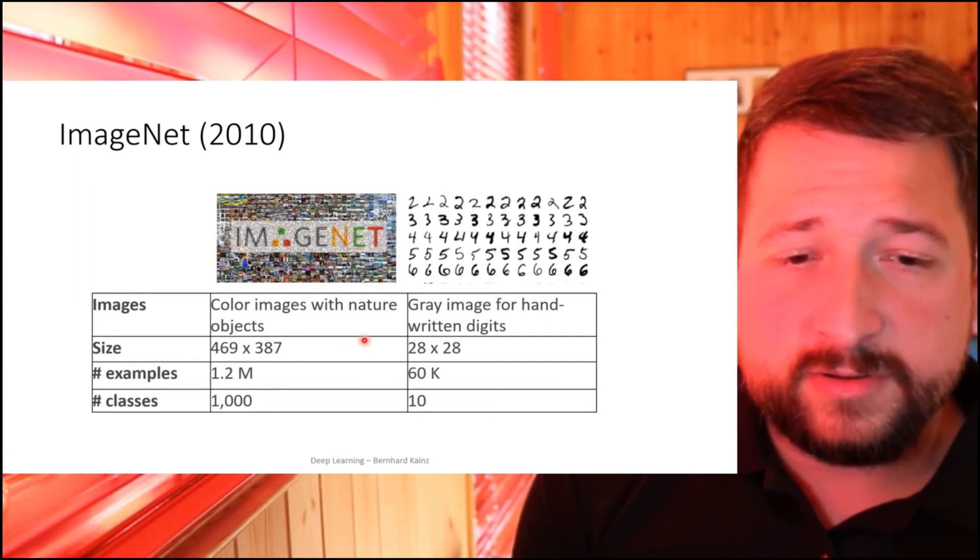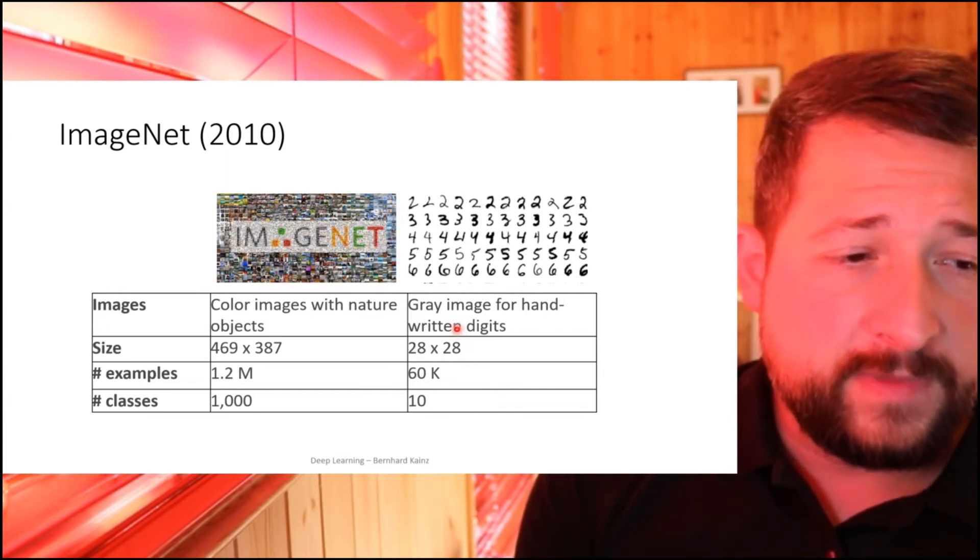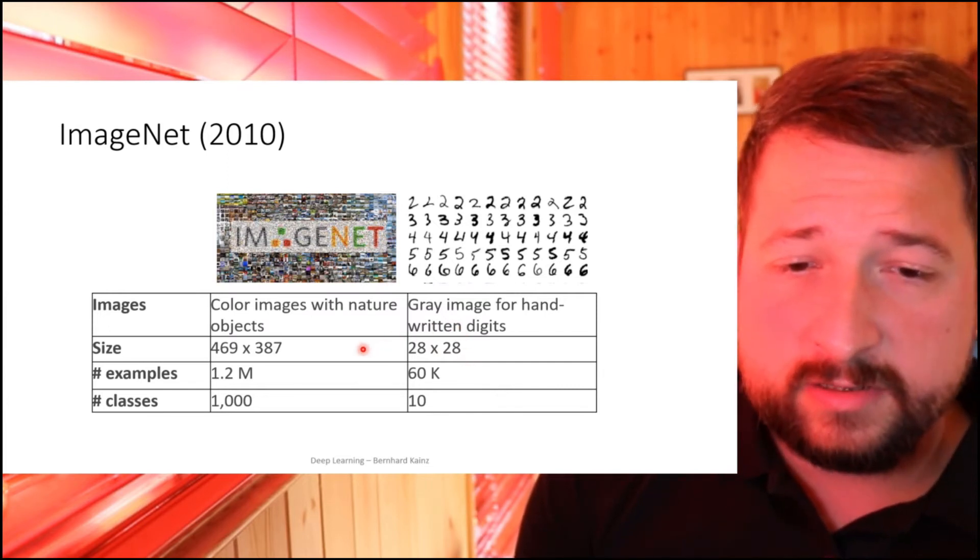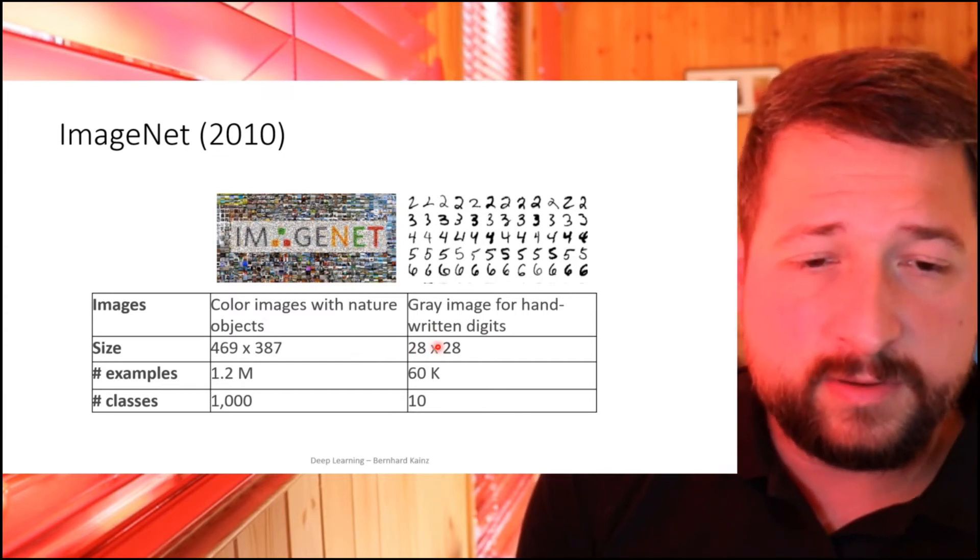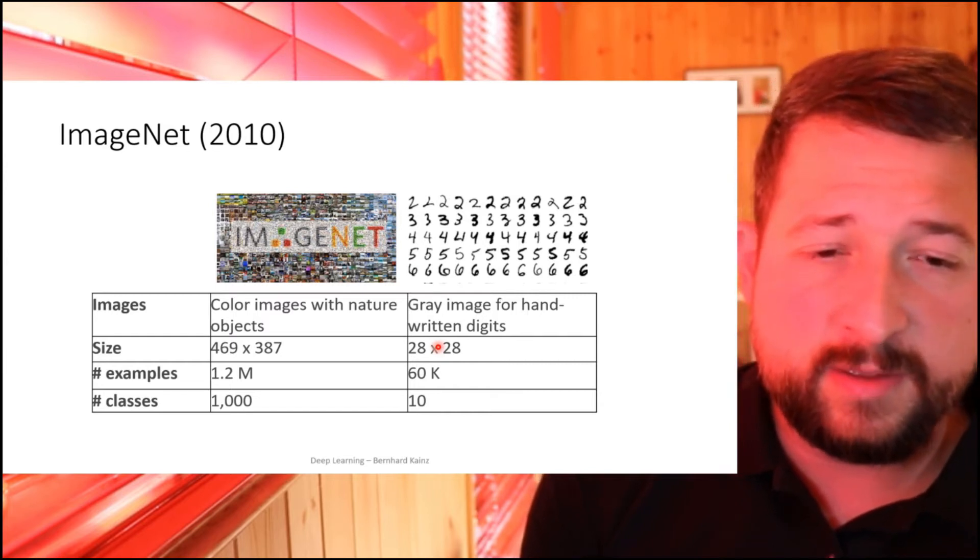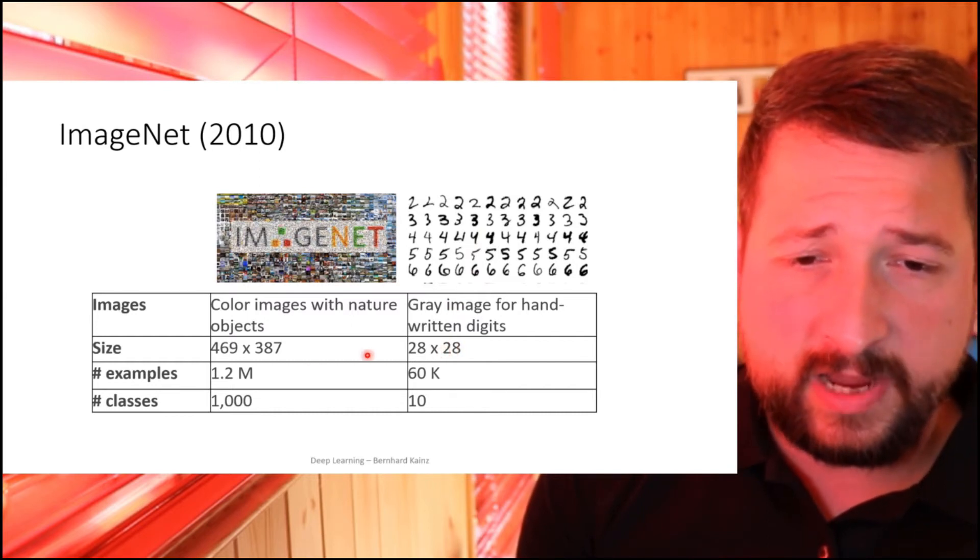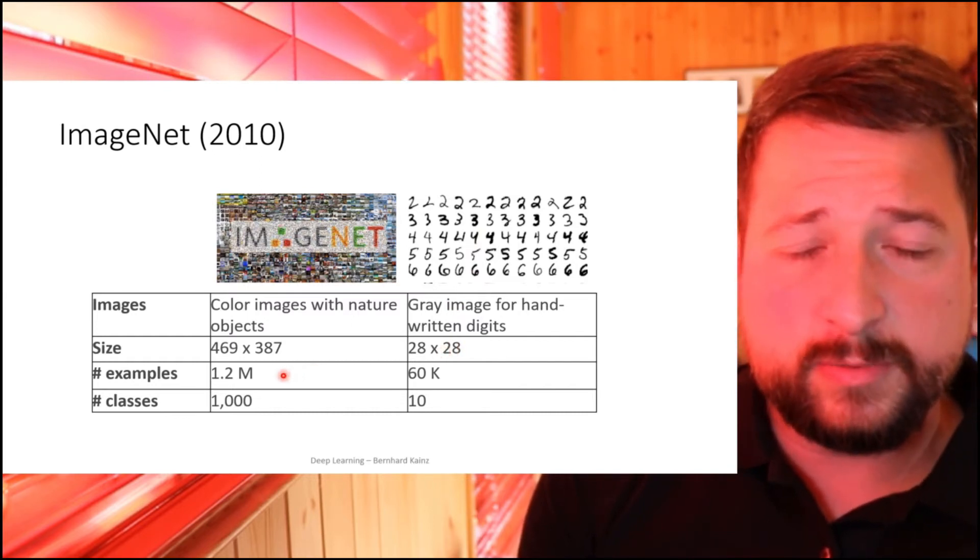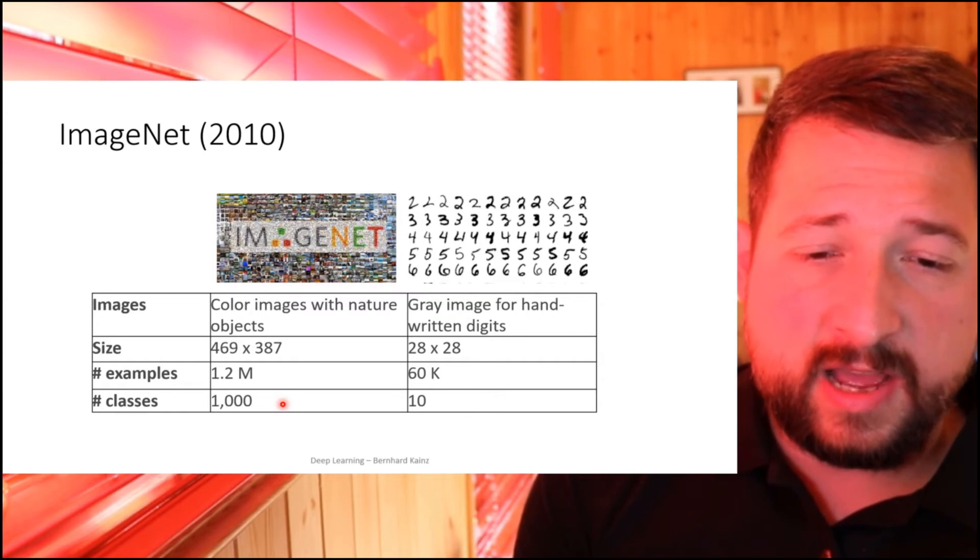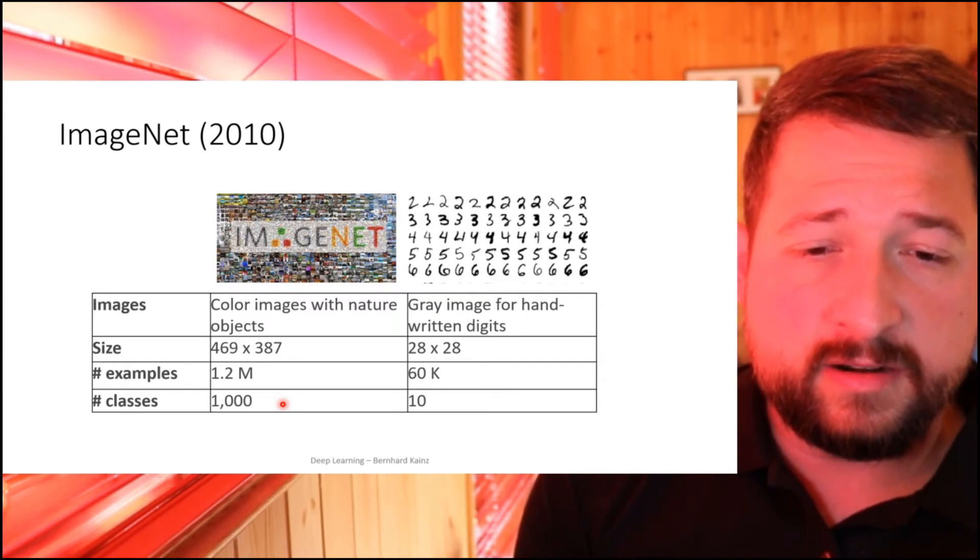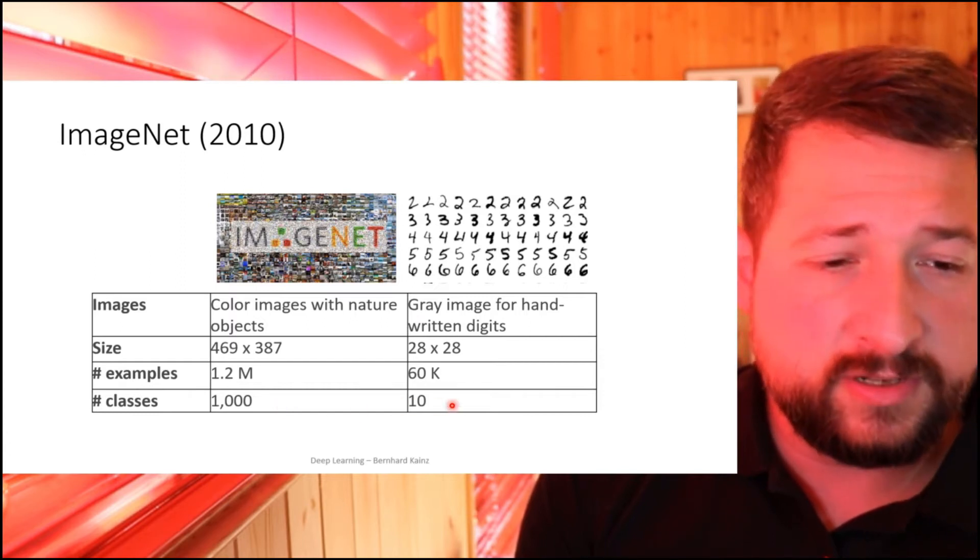If you compare this to MNIST, where most of the MNIST sets you find nowadays have 28 by 28 pixels, there's now also color, so we have three channels while MNIST is only gray values. There are variants of MNIST that come in color, but the basic MNIST data set is gray values. And now sample size is considerably larger compared to the 60,000 samples you get in MNIST, and the classes again are a factor of 100 larger than what you have in the digit recognition task.